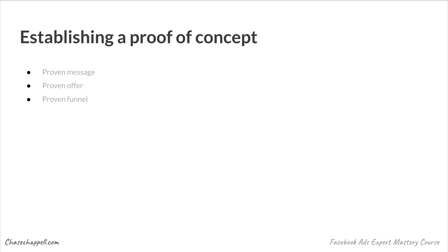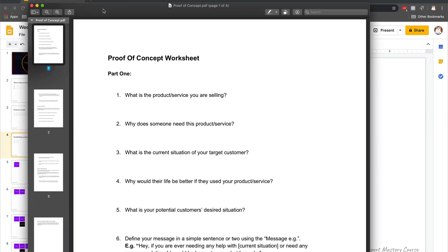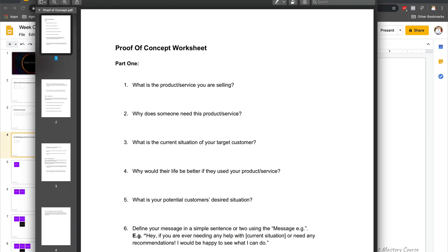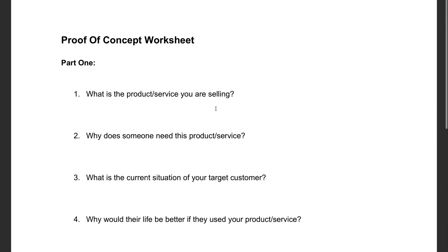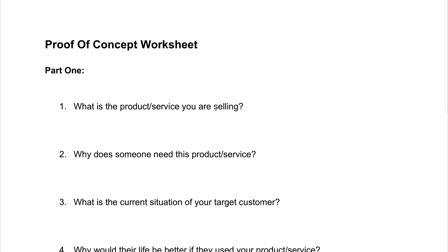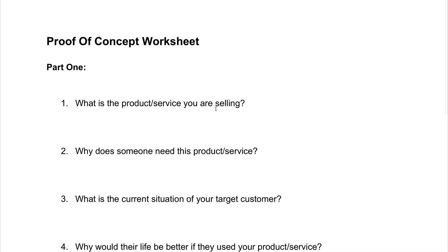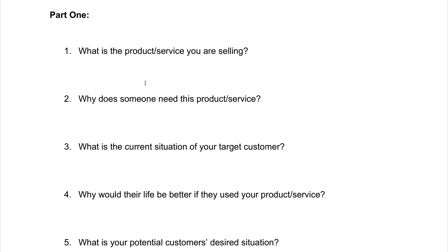What I want you to do is go ahead and open up the worksheet below. The worksheet should look something like this — it's called the proof of concept worksheet and it's linked below. You can go ahead and open it and make a copy in Google Docs. You're going to start filling this out so that way you can really identify the main points that we're going to start using in order to start generating some clients and getting some people to buy our product or service.